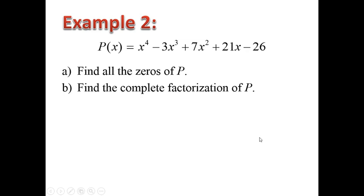Here's another example for finding the real zeros and the complex zeros, and again, the last thing we'll do is find the complete factorization. If you count the terms — 1, 2, 3, 4, 5 — so the highest degree is to the 4th power. This one is called the 4th degree pentanomial.